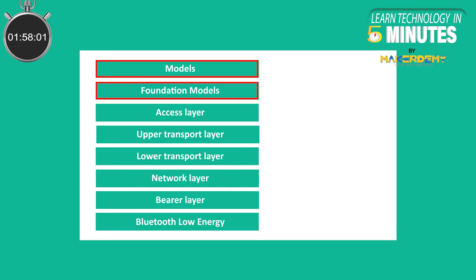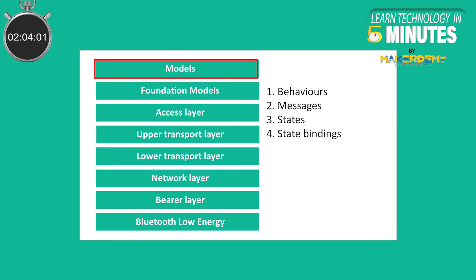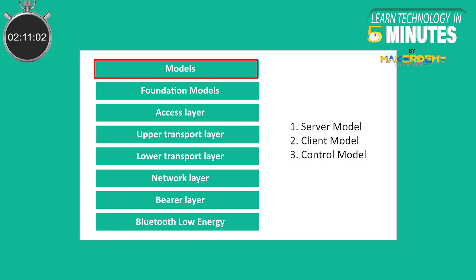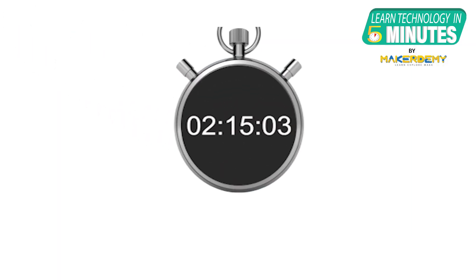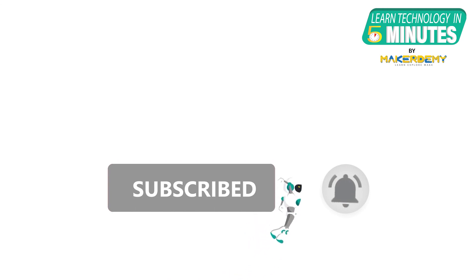Foundation Models and Models Layer: The Foundation Layer is concerned with the network configuration and network management models. The Models Layer addresses the implementation of models including behaviors, messages, states, and state bindings. There are three types of models: Server Model, Client Model, and Control Model. That is all folks — if you like this video, smash the subscribe button and ring the bell to be updated about our future video releases.